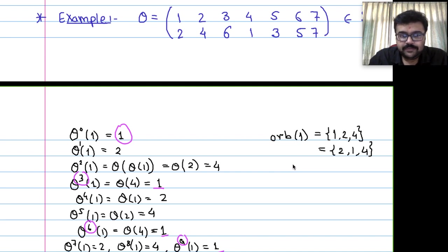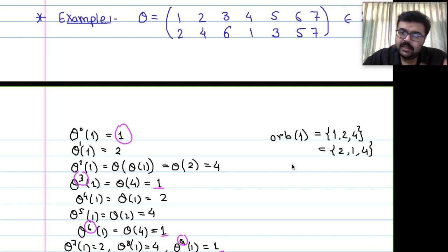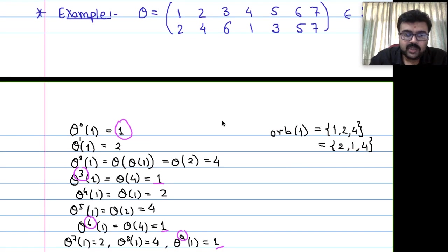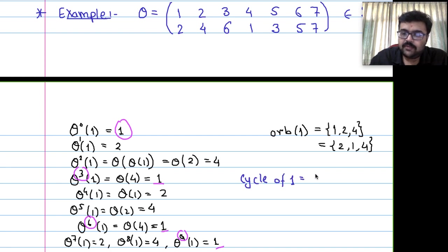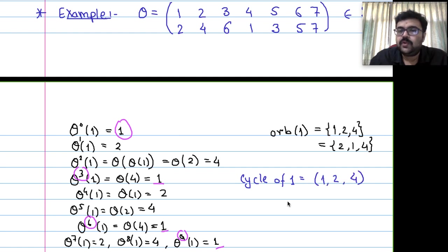The cycle of 1 is: 1 goes to 2, 2 goes to 4, 4 goes back to 1. This is written as (1, 2, 4). Unlike the orbit, we cannot change the order in a cycle. Starting from 2 gives (2, 4, 1), from 4 gives (4, 1, 2) — these are all the same cycle written differently.